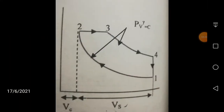This is your Diesel cycle. In the Diesel cycle, 1 to 2 is the reversible adiabatic compression, 2 to 3 is the constant pressure heat addition, 3 to 4 is the reversible adiabatic expansion, and 4 to 1 is the constant volume heat rejection. Let us compare this cycle with another cycle known as the Atkinson cycle. If you remember the Diesel cycle, you can easily remember the Atkinson cycle.